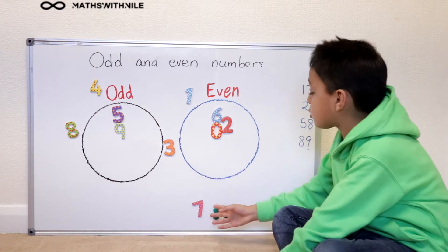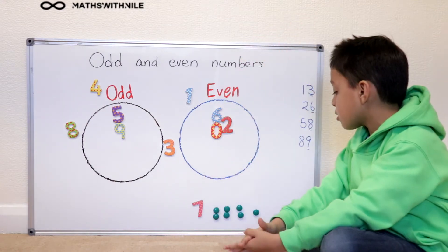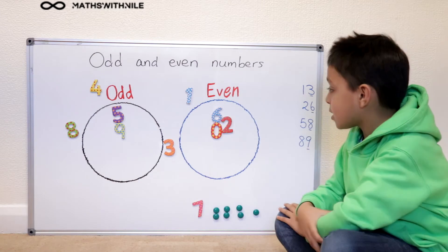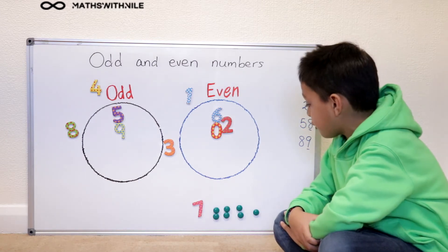So you can see we got three lots of twos and we got one left over, so it is an odd number.